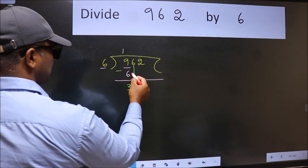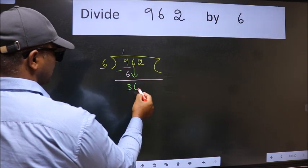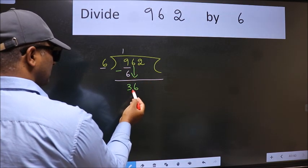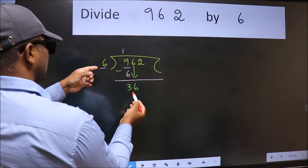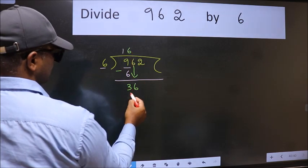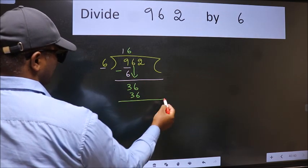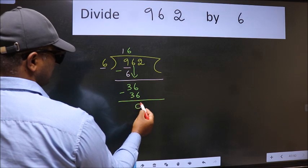After this, bring down the beside number. So 6 down. 36. When do we get 36 in 6 table? 6, 6, 36. Now we subtract. We get 0.